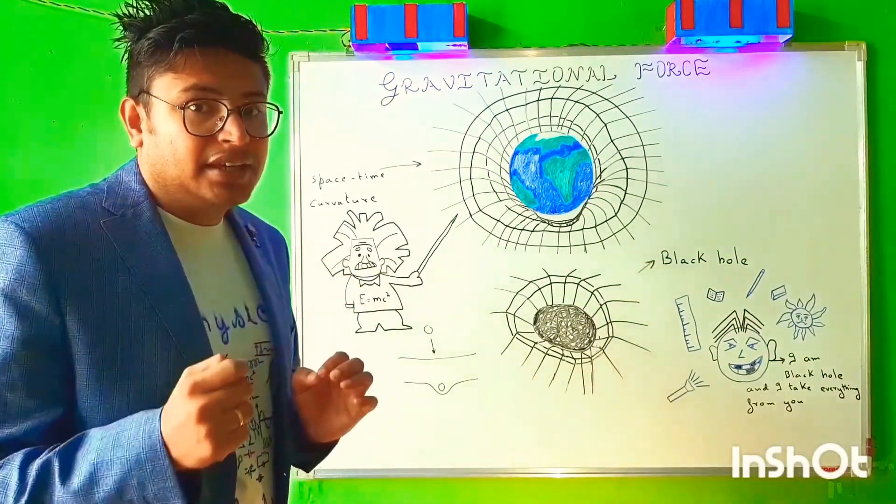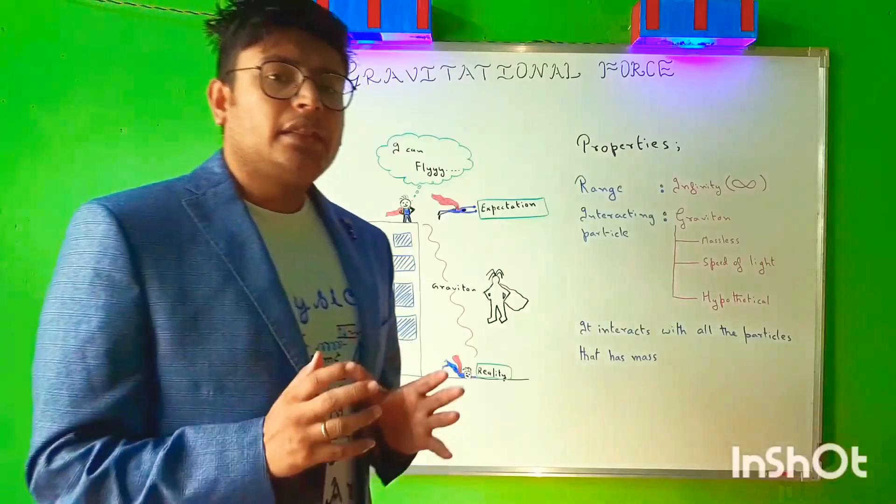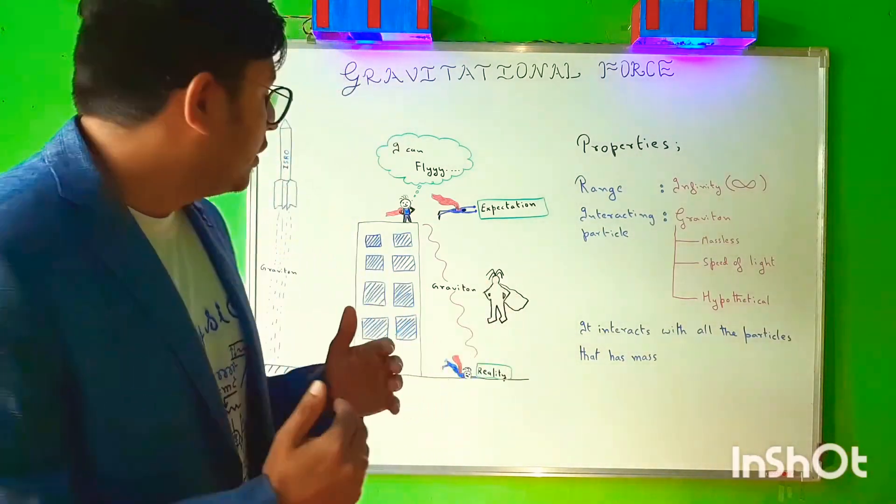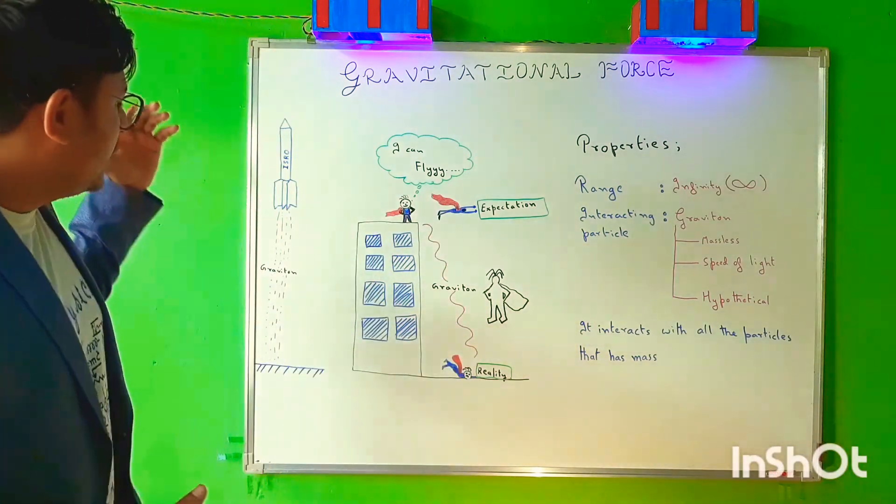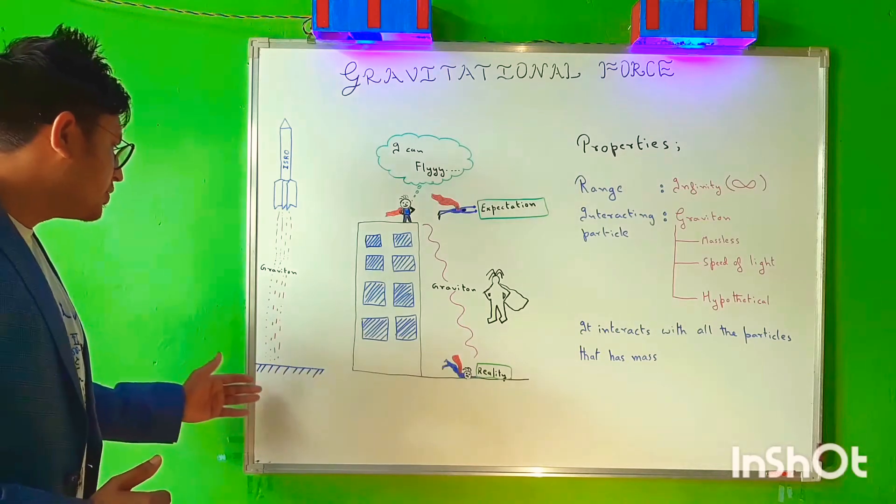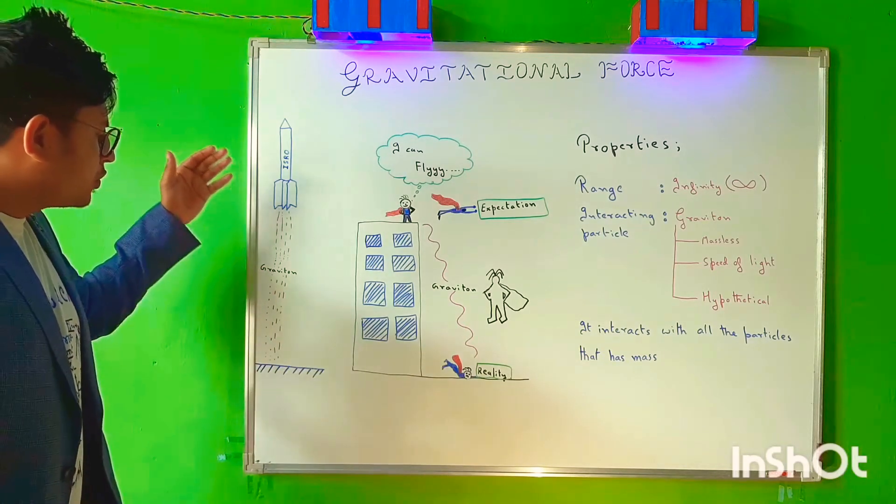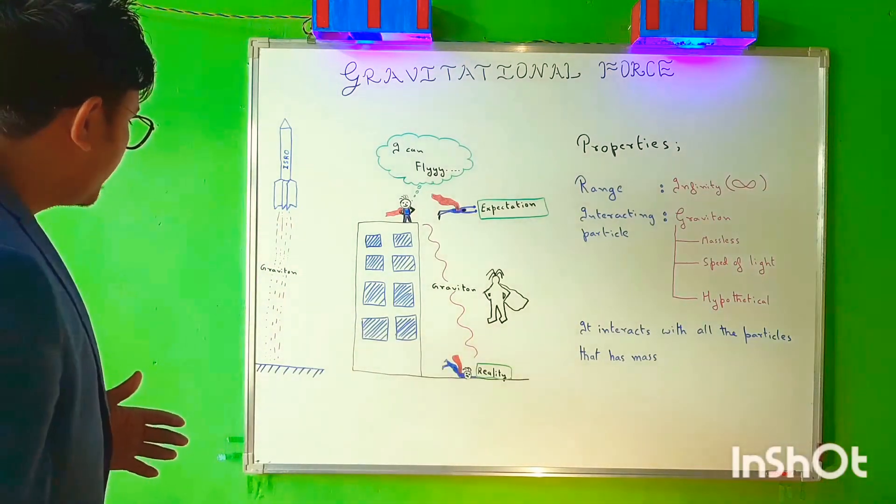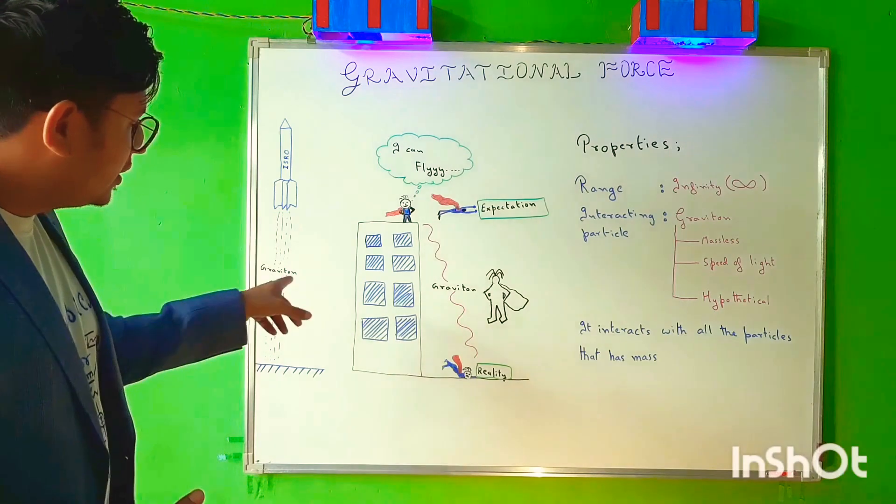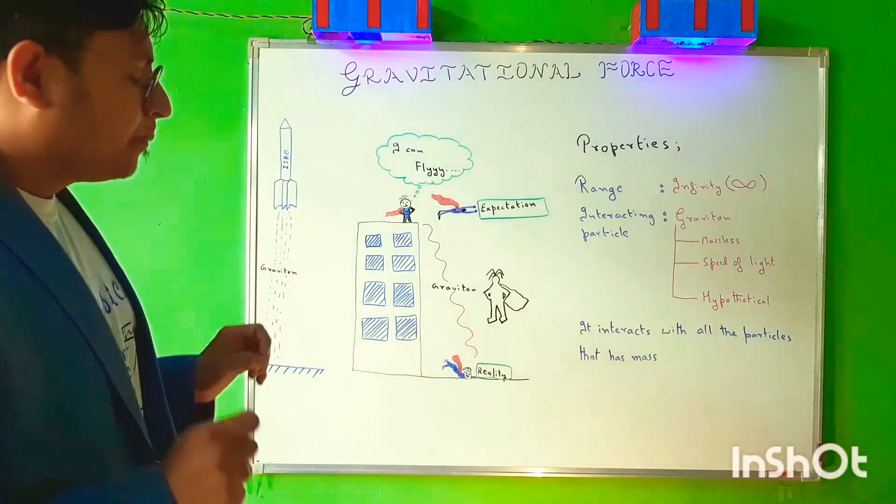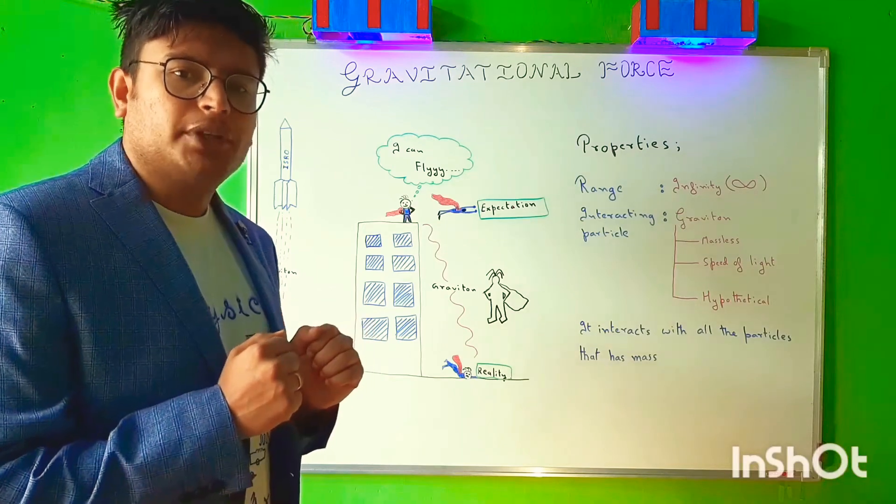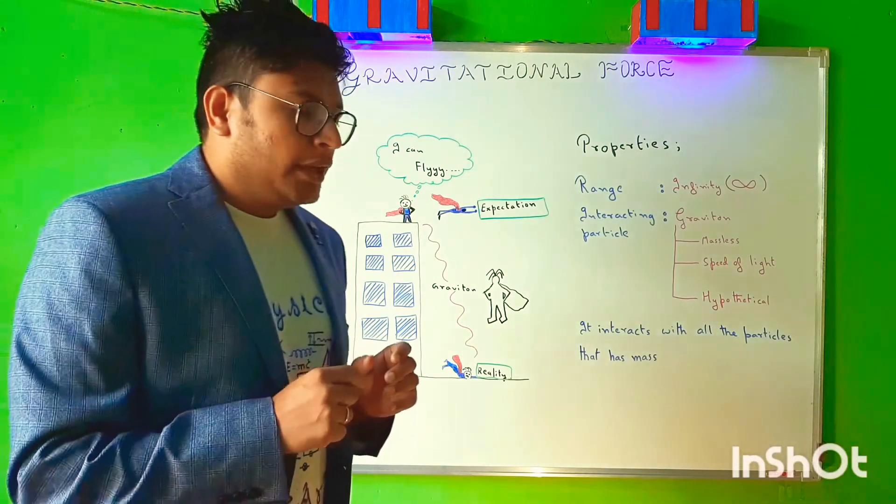At the quantum realm, the force between two objects is described as the exchange of a particle. If I consider this particular case - consider this rocket to be one object, consider this surface as second object - so according to the quantum realm, the force between these two objects is mediated by the exchange of a particle. In this case it is graviton. So this exchange particle carries the energy and the momentum between the objects and is said to mediate the interaction.